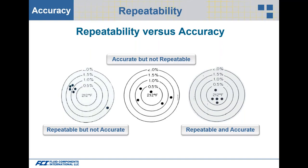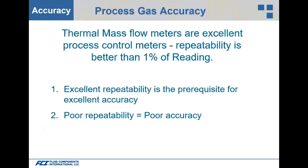Accurate but not repeatable shows a scattering around and in the bullseye. On the right-hand side we have repeatable and accurate. With thermal mass flow meters and air and gas, they're excellent process control meters — repeatability is better than one percent of reading, meaning those dots are all aligning repeatedly in the same area. Excellent repeatability is a prerequisite for excellent accuracy. Poor repeatability means poor accuracy.